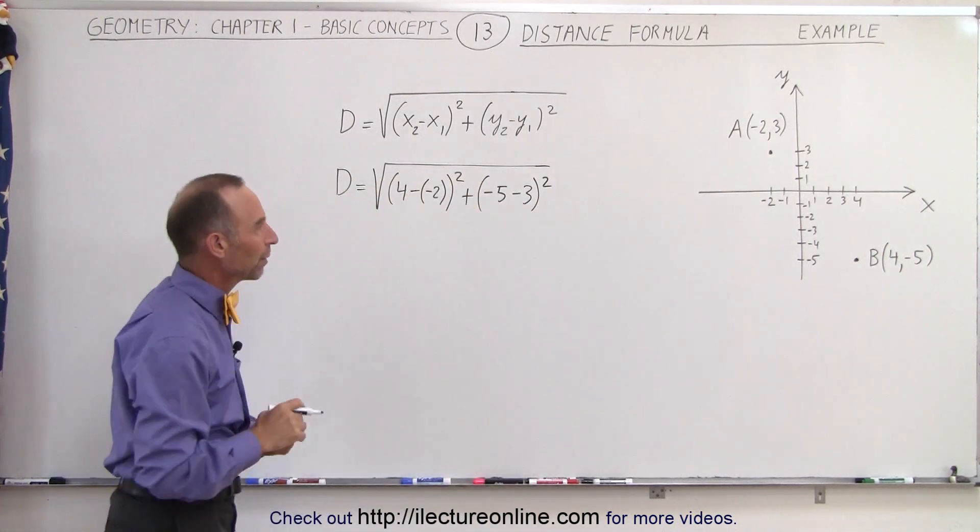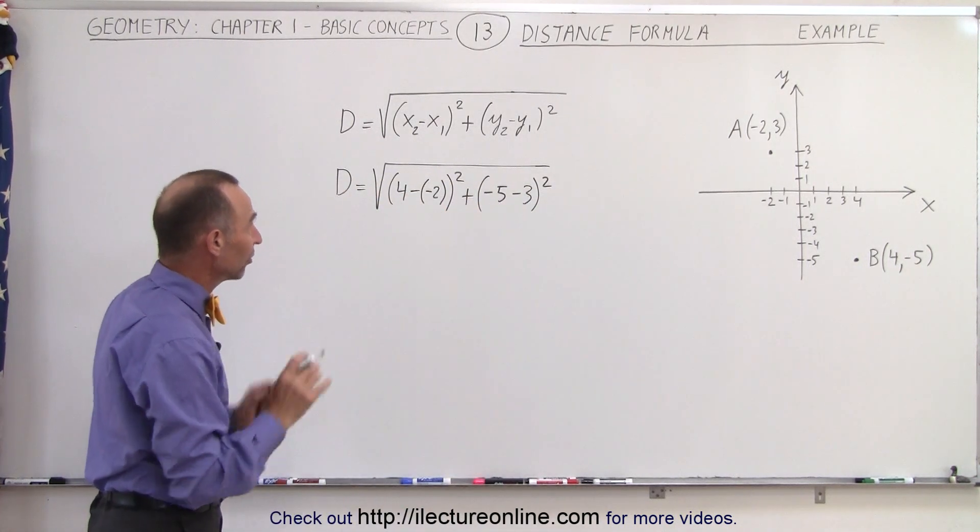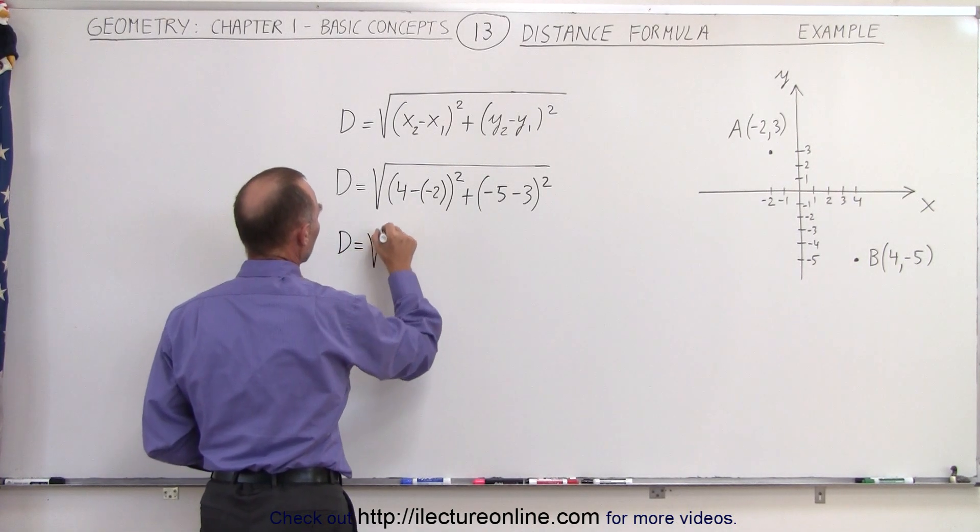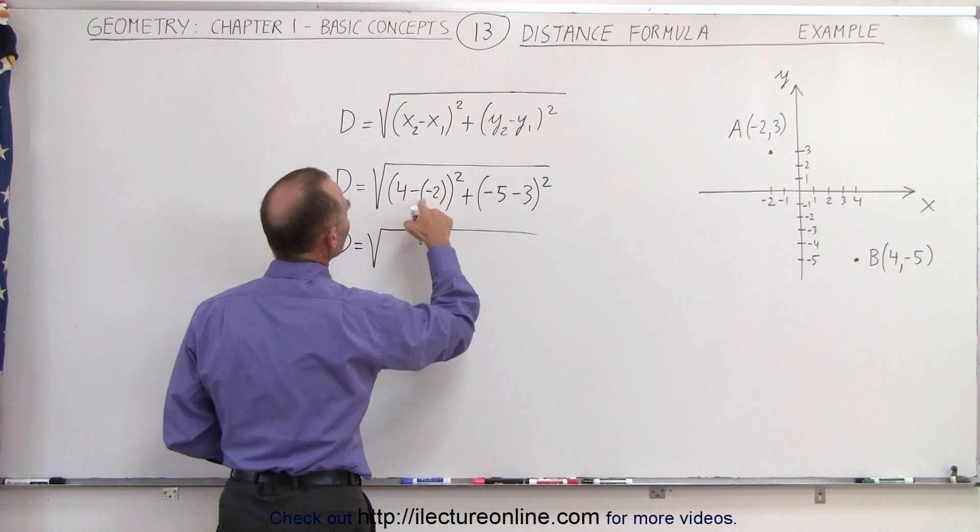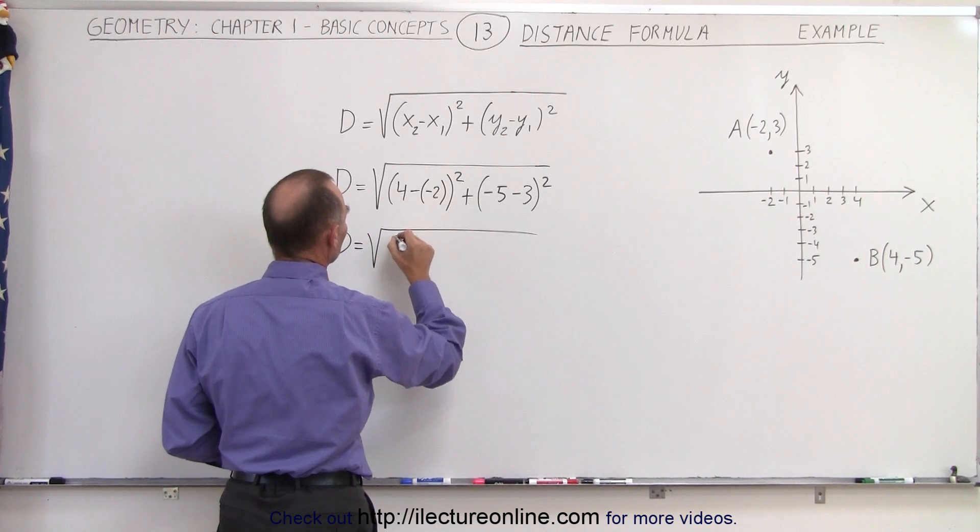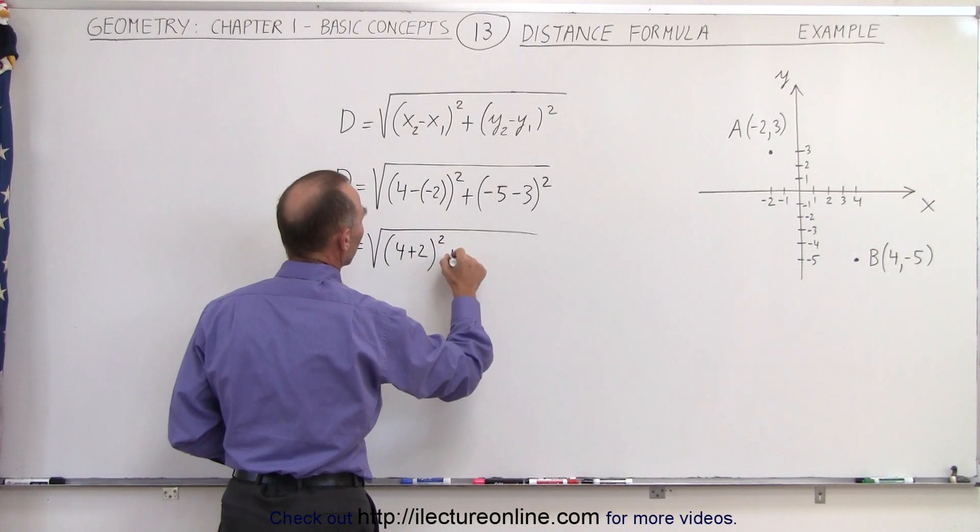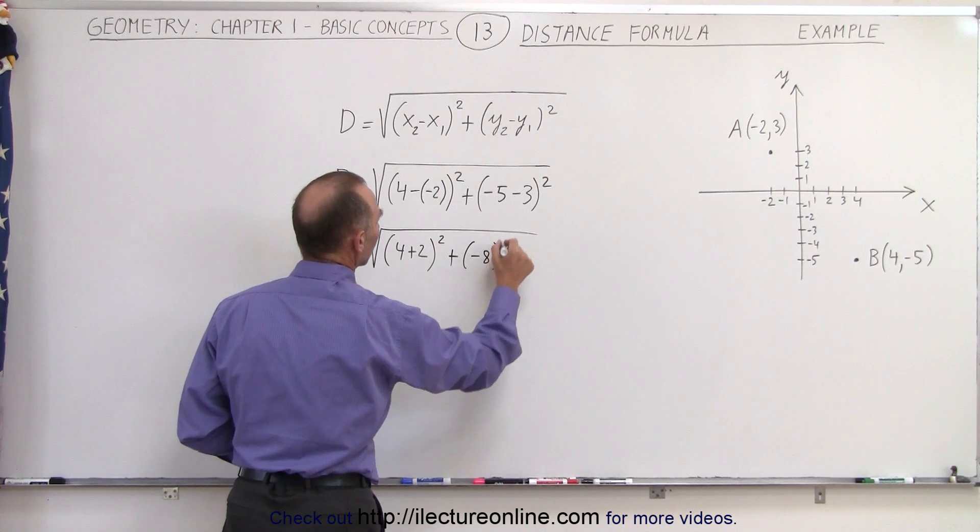So again, it really doesn't matter which order we place it in as long as we stay consistent. So here we have d is equal to the square root of 4 minus a minus 2, that would be 4 plus 2 squared plus a negative 8 squared.